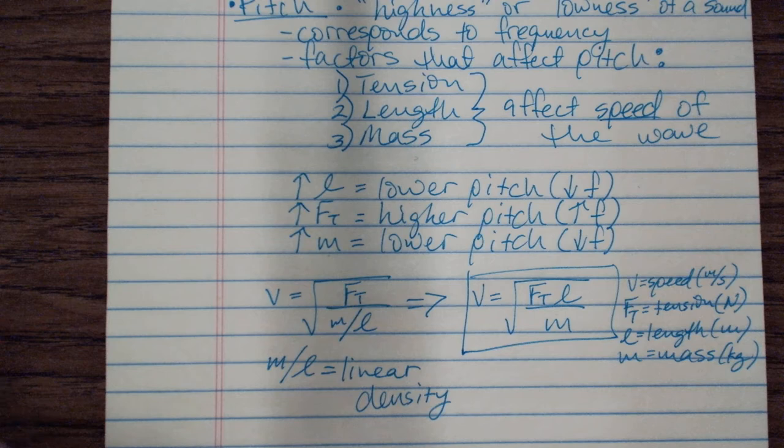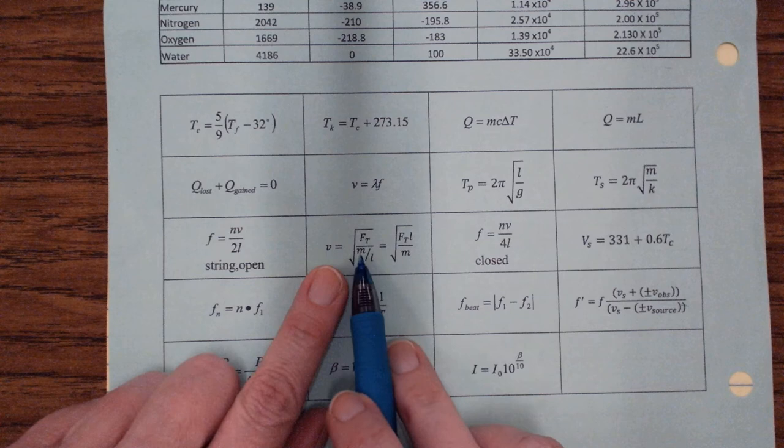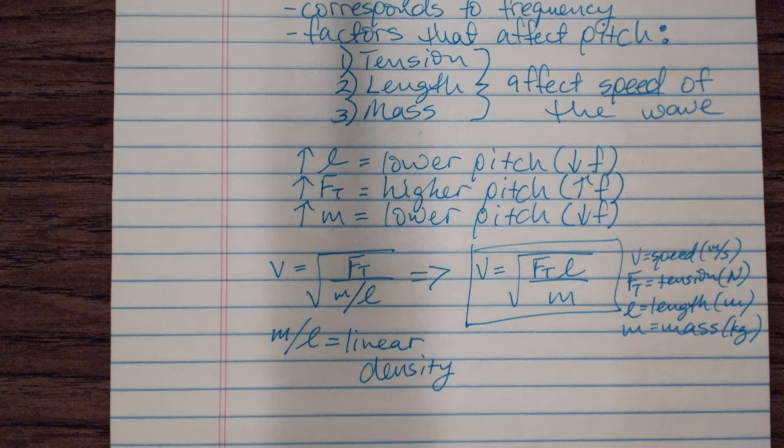On the back of your formula sheet there's your string equation — it says v equals what I just described with the linear density on the bottom. The string frequency formula is also on there.